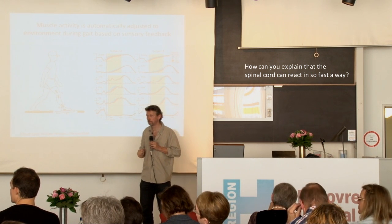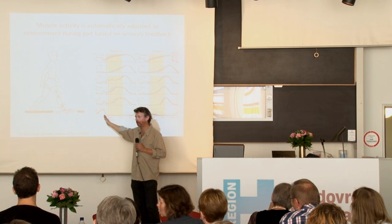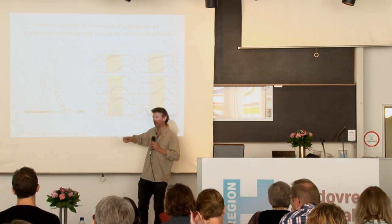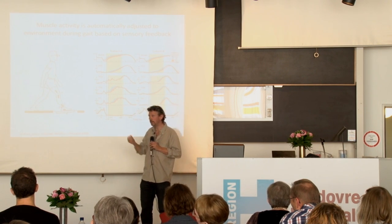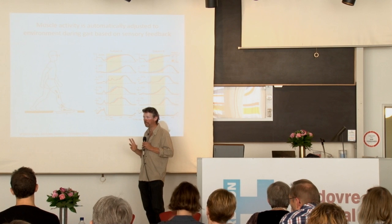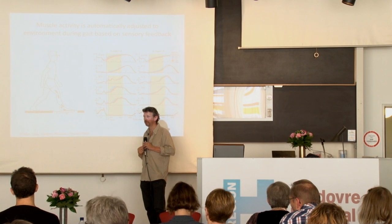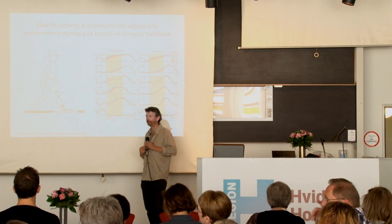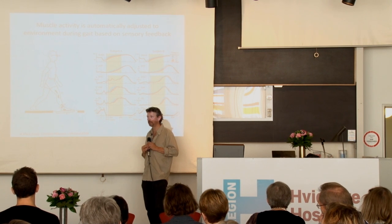How can you explain that the spinal cord can act so fast? Because there are connections coming from force sensors. When you have the impact, within 35 milliseconds — this is the minimum latency where you can actually have a response. The latency of a stretch reflex, for instance, is in the order of 35 milliseconds. So it cannot be any other mechanism than a reflex mechanism going through the spinal cord. But the nerve signal has to go one meter to the spinal cord, have a synapse, and go down again. And it does that in 35 milliseconds. It's quick.